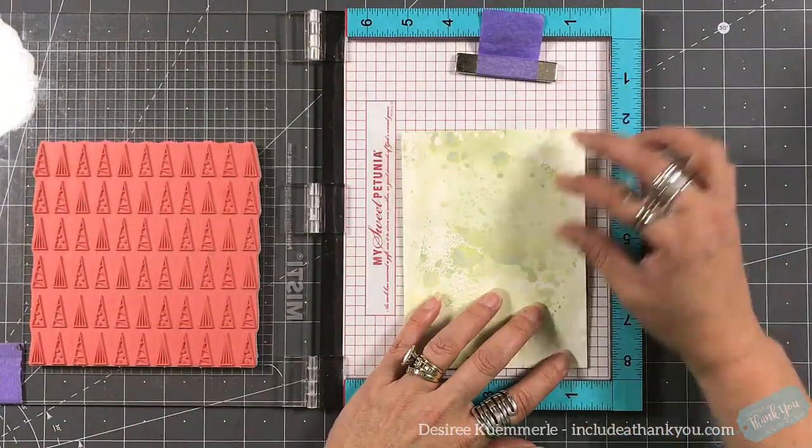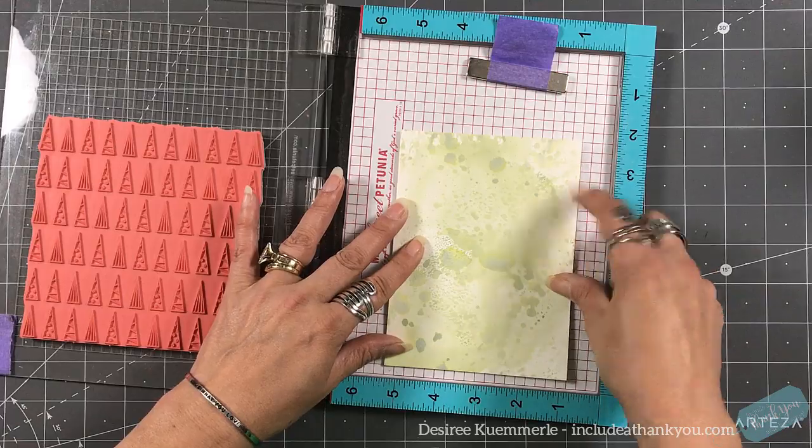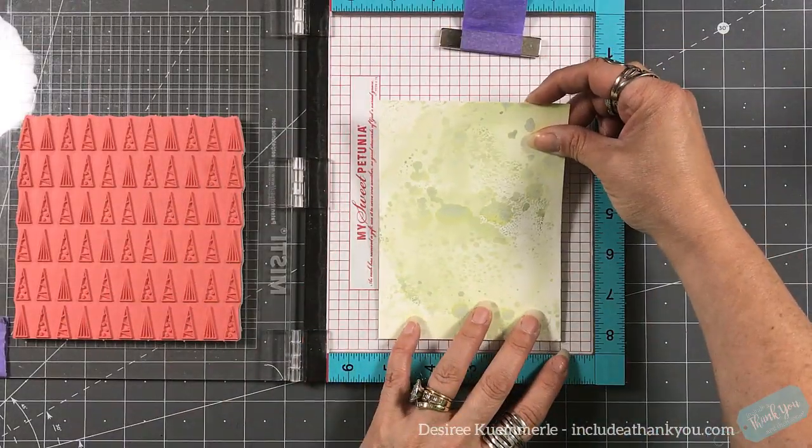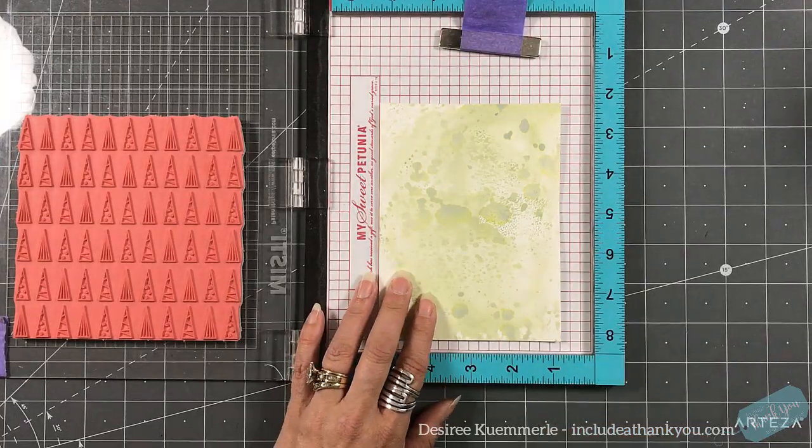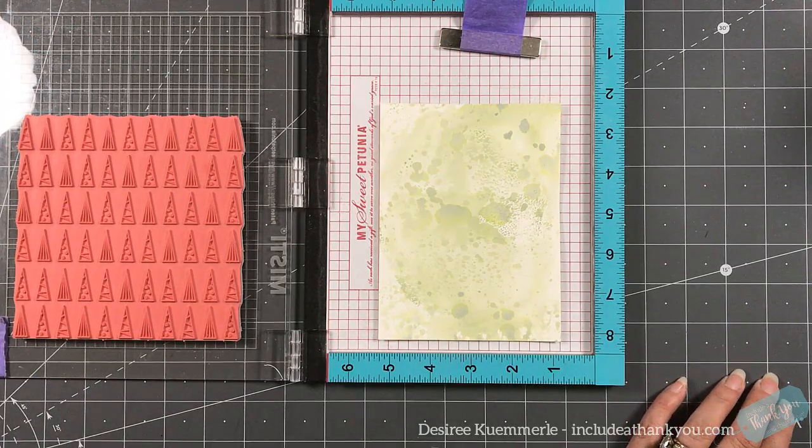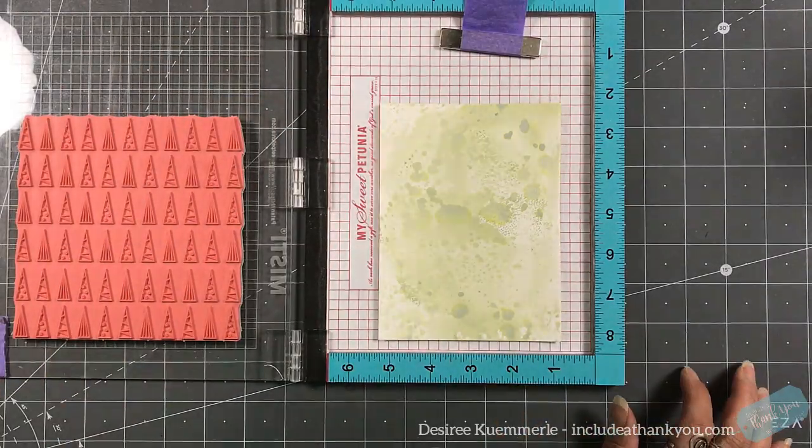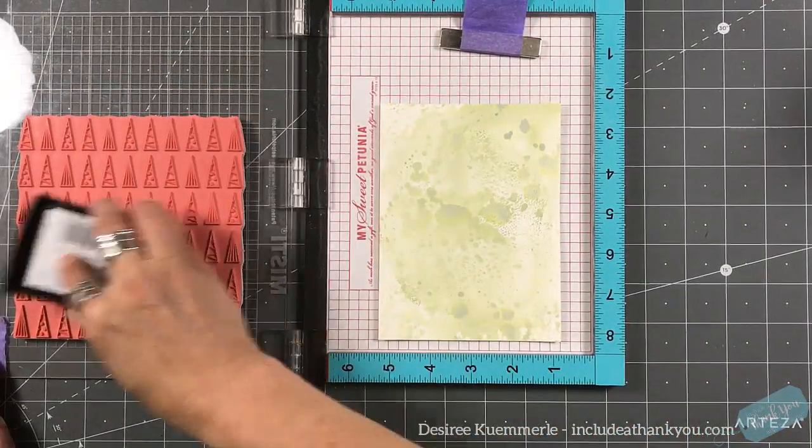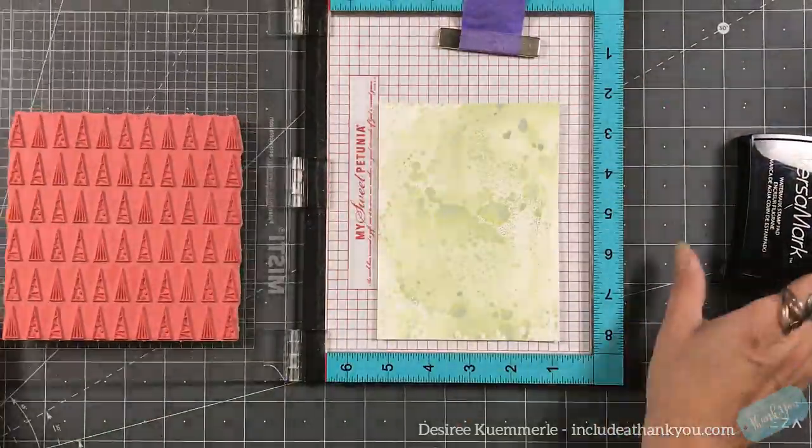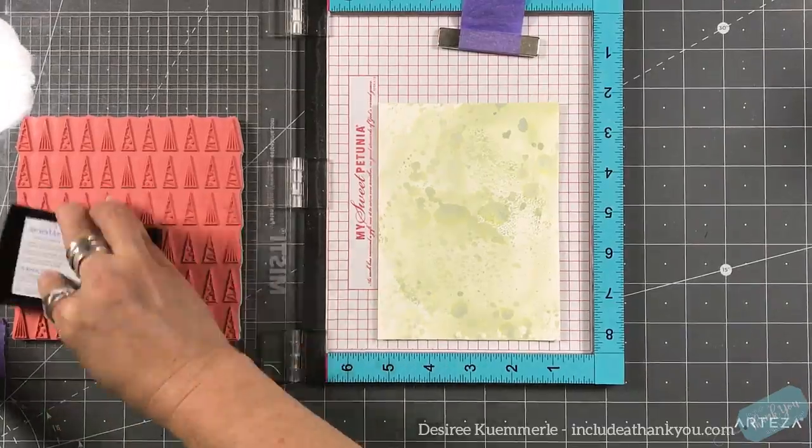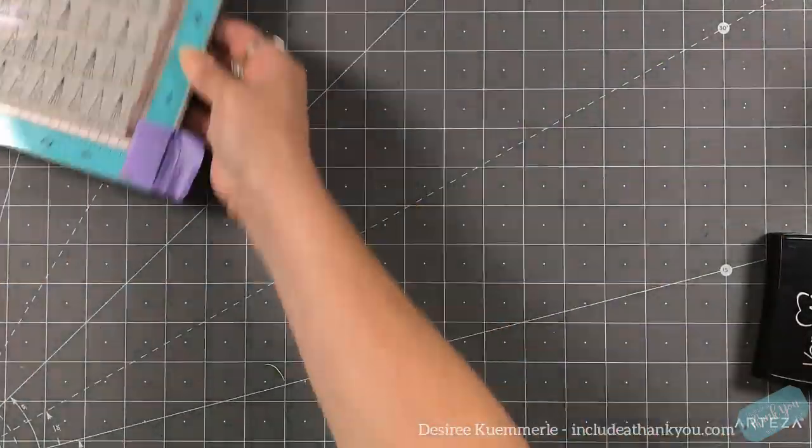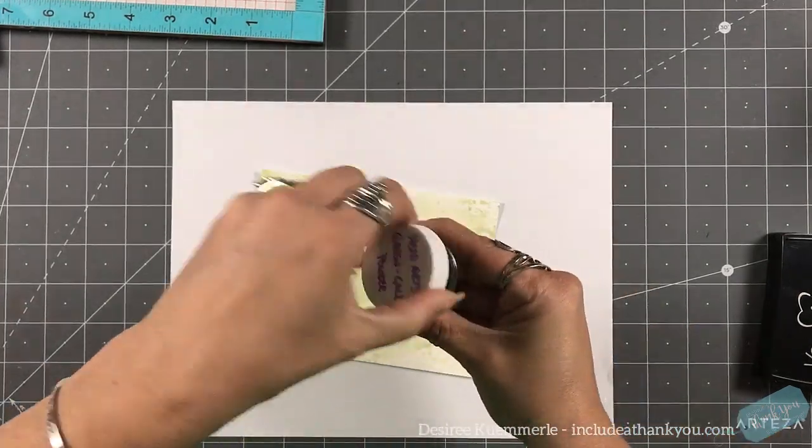I have my background stamp set up in my stamp positioner and I'm going to use some repositional tape for the back of my panels just to make sure that they'll stay in place because I like to stamp twice just to make sure. I'm going to use my anti-static pouch, make sure I've got a nice coating of that. And then I'm going to grab my VersaFine ink and I'm going to stamp this image down onto this panel. I'm going to apply some pressure to make sure that I do have a good impression. I just like to stamp twice.